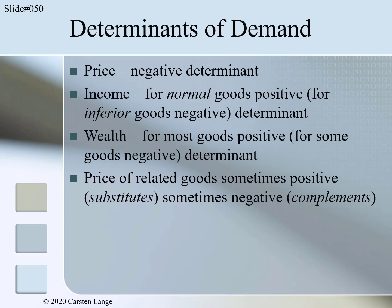On the other hand, if we analyze the demand for lift tickets in ski or snowboard resorts, a related good would be snowboards. If the price for snowboards increases, the demand for lift tickets would go down because people buy fewer snowboards and therefore fewer people would buy lift tickets. In this case the effect is negative — the price for snowboards goes up and the demand for lift tickets goes down.